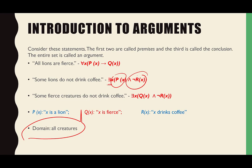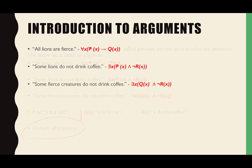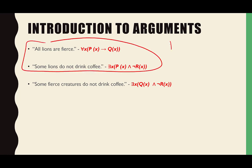Some fierce creatures do not drink coffee: there exists some creature that is fierce and it does not drink coffee. So looking at the screen: 'all lions are fierce' is one formula, 'some lions do not drink coffee' is another, and 'some fierce creatures do not drink coffee.' These first two are the premises, and the last one is the conclusion.